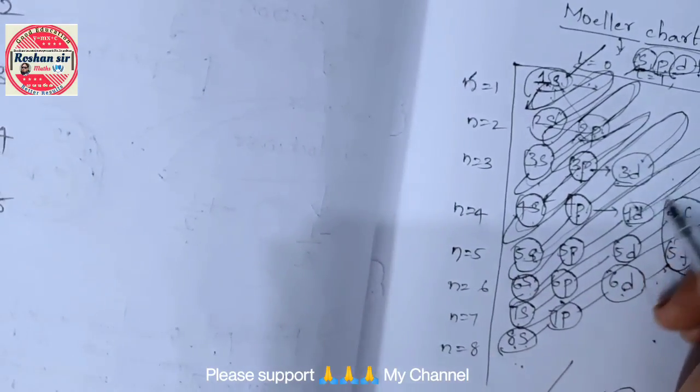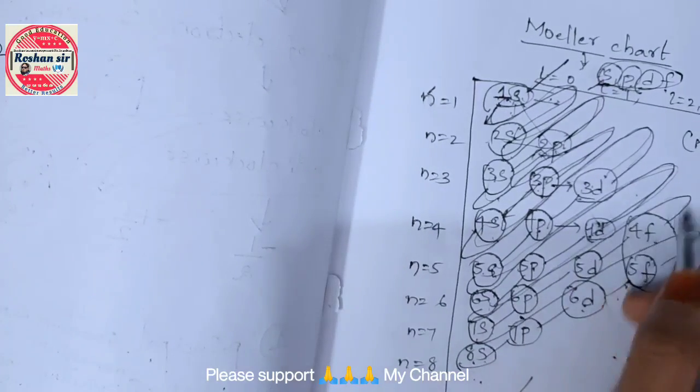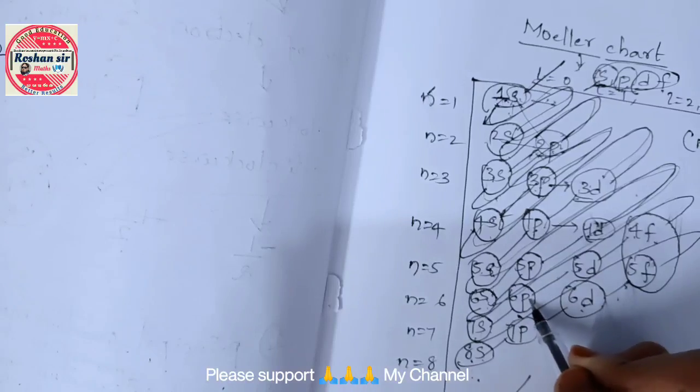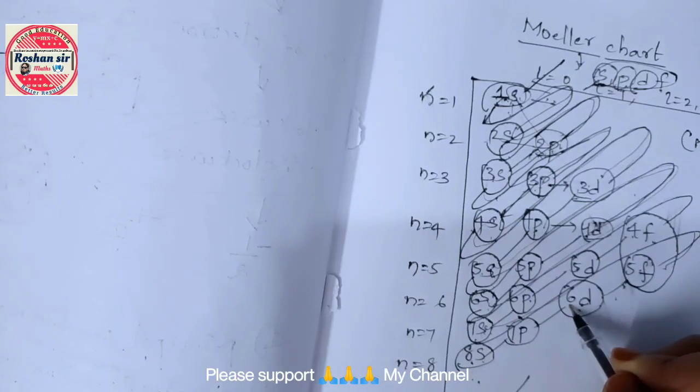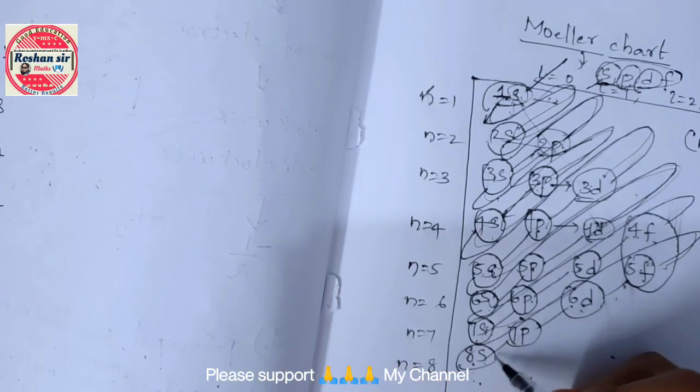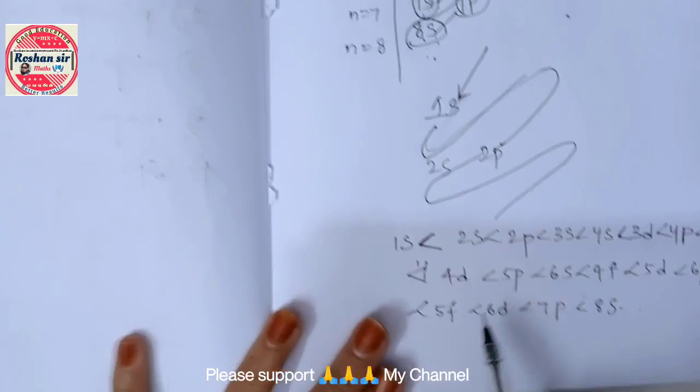4f, 5d, 6p, 7s, 5f, 6d, 7p, 8s is the last. This is the order, this is the ascending order.